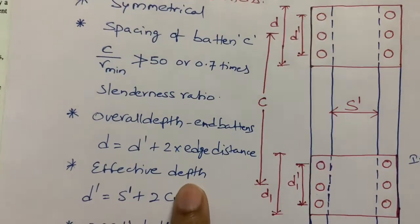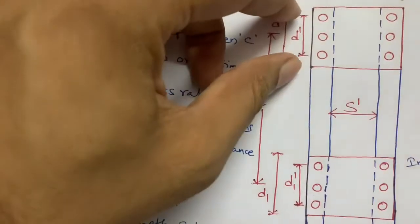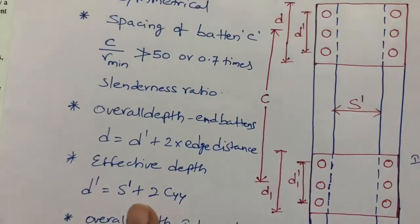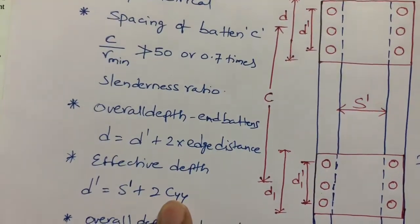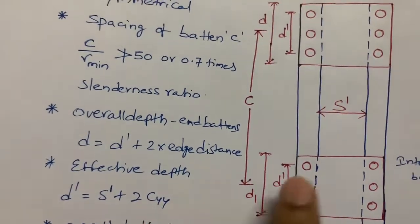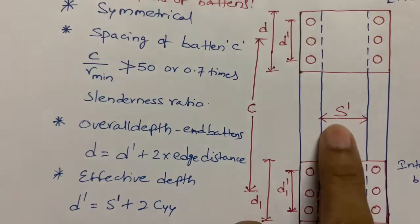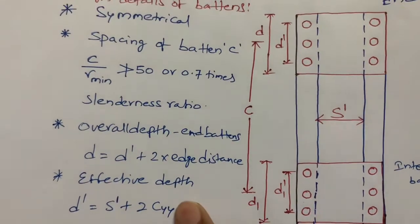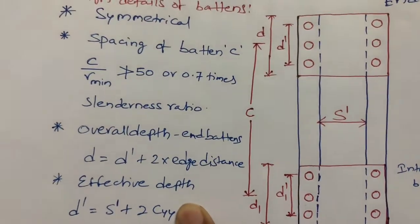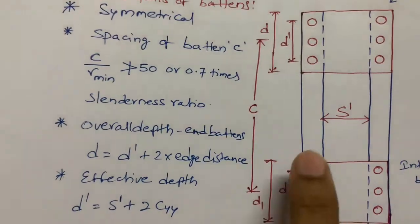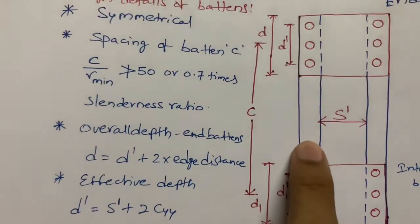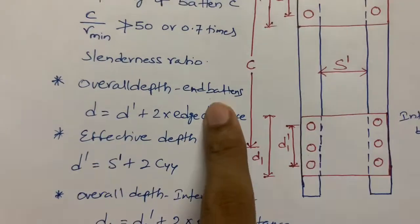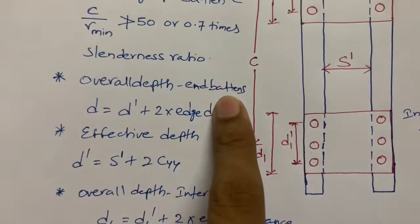The effective depth is d', where d' equals s' plus two times cy. s' is the spacing between the two channels, and the cy value is available in the steel tables book for the channel section. This is how you calculate the end battens.